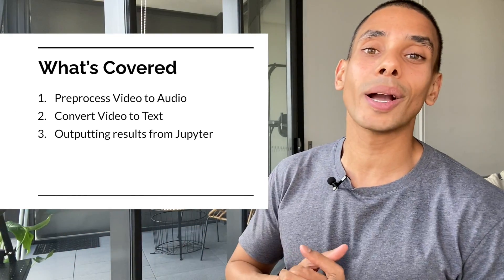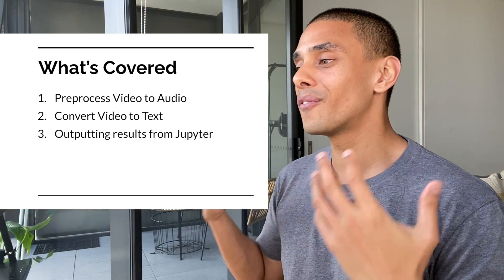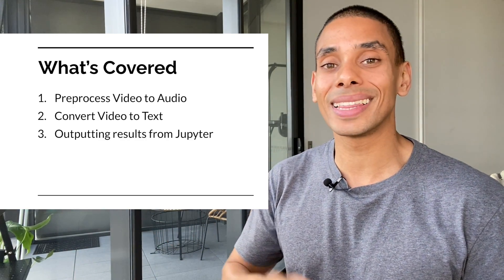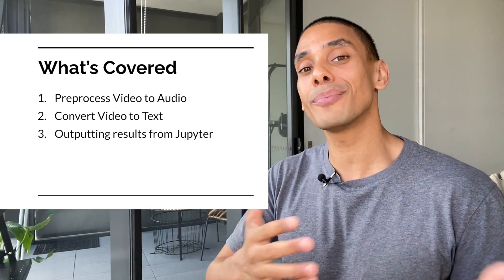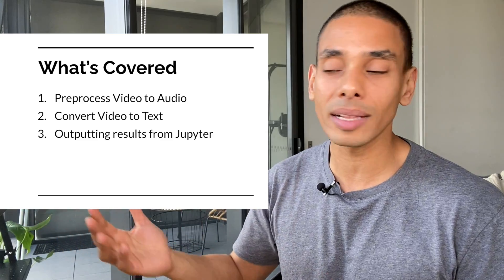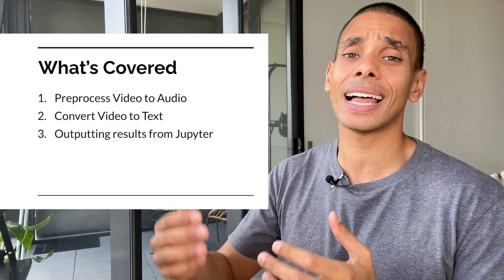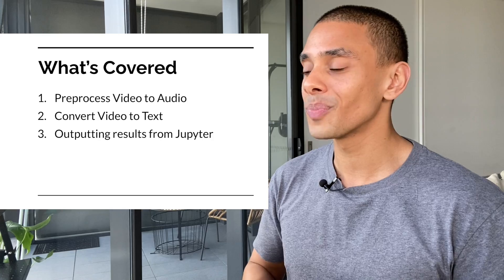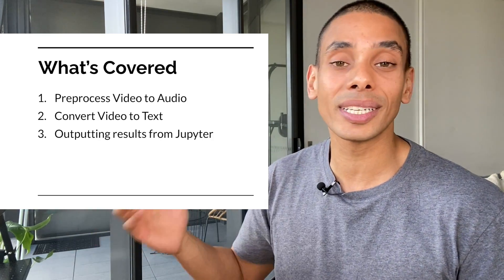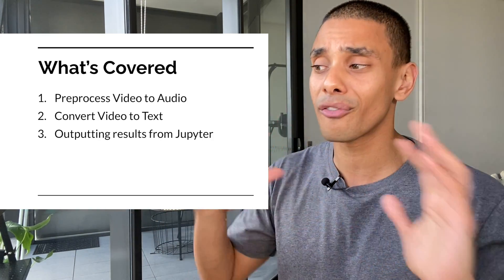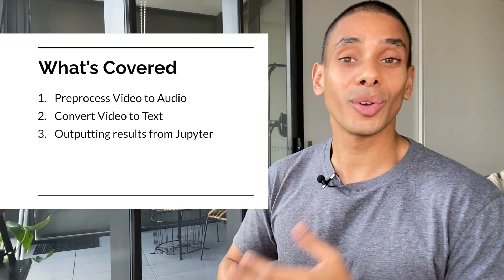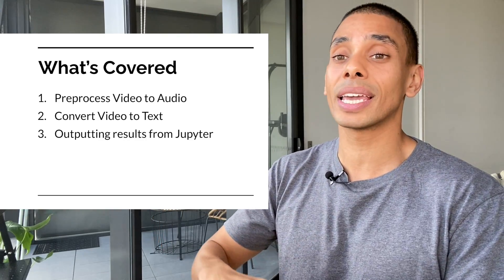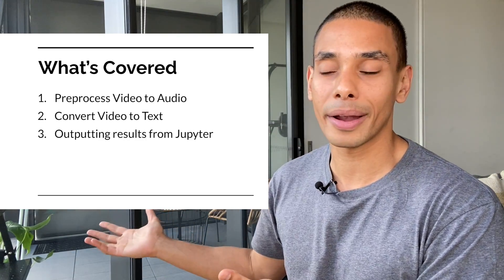Let's take a look in greater detail at what we're going to be going through. We're going to be converting video to text. We'll start out by using the YouTube DL library to download virtually any YouTube video. We're then going to pre-process that video to audio using the FFmpeg library, then convert that audio to text using the Watson speech to text service for free, and output those results into a text file so you'll have a full-blown transcript.